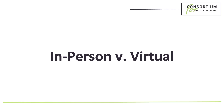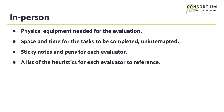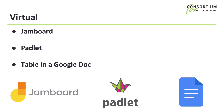Heuristic evaluation can be done in person or virtually depending on your needs and what you are reviewing. If you are in person, you will need the physical equipment needed for the evaluation, space and time for the tasks to be completed uninterrupted, sticky notes and pens or other reference tools for each evaluator, and a list of the heuristics for each evaluator to reference. If you are conducting your evaluation virtually, consider using a virtual whiteboard such as Jamboard or Padlet, or a table scorecard in Google Docs for evaluators to type their responses into. Whichever virtual tool you use, make sure your evaluators have capacity to take notes in it and complete the tasks under review at the same time.